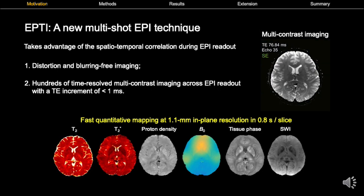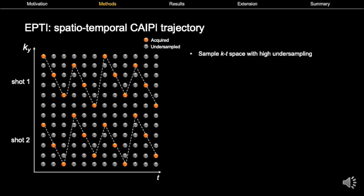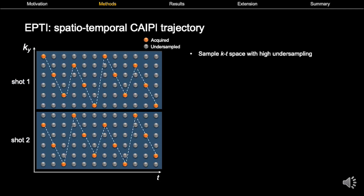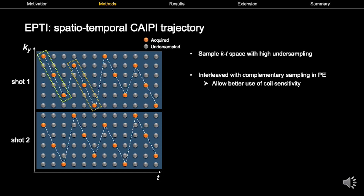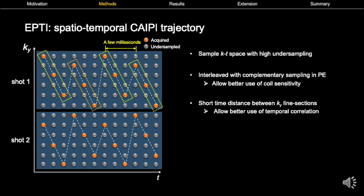This allows fast quantitative mapping at 1.1 millimeter in-plane resolution in just 0.8 seconds per slice. We achieve this using a spatial and temporal CAPI trajectory that samples the phase encoding and time-space with high under-sampling rates. Only several shots are needed to sample the whole space, and each shot covers a KY segment using a zigzag trajectory with multiple diagonal KY line sections. The two temporally adjacent KY line sections are interleaved with complementary sampling in the phase encoding direction for better use of coil sensitivity.